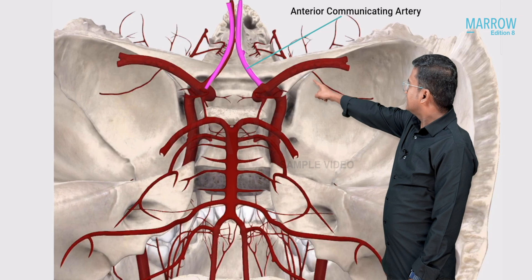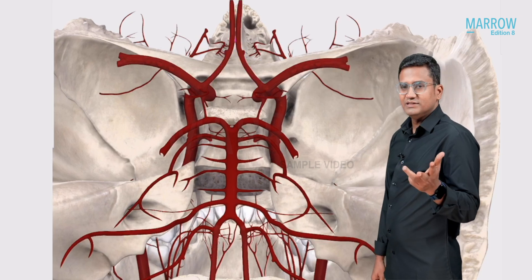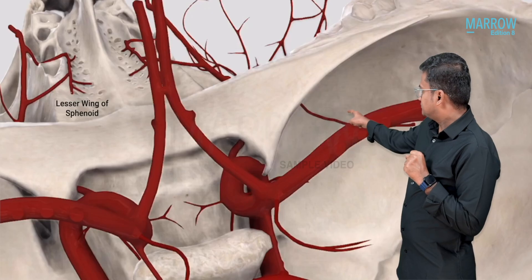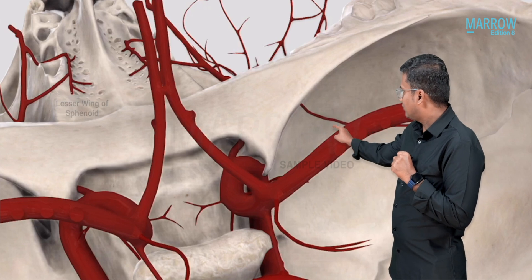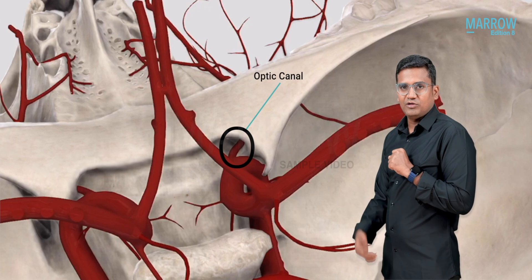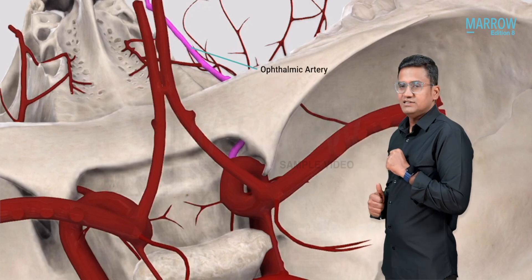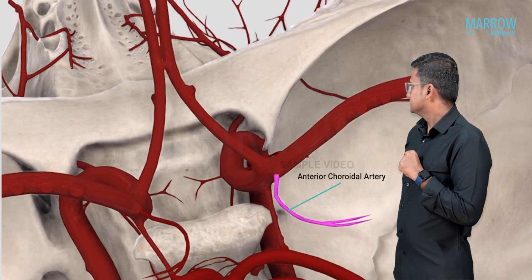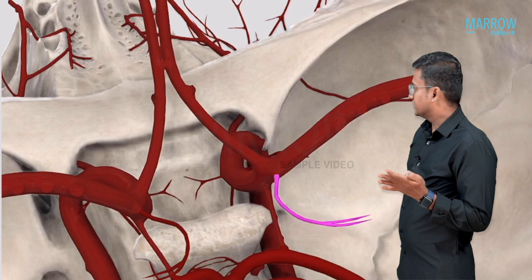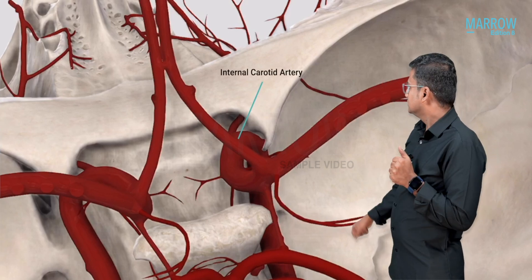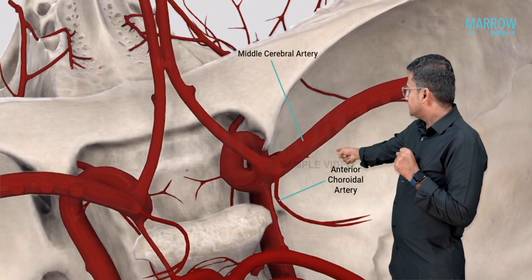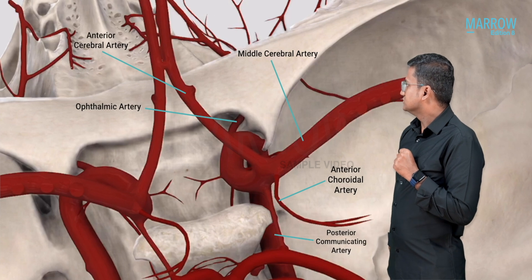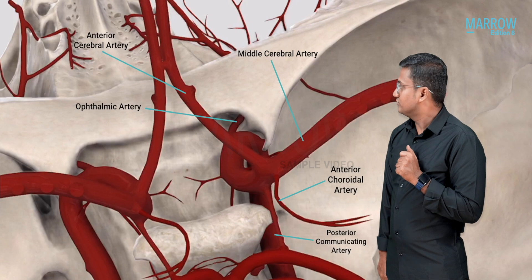The two anterior cerebral arteries are connected by the anterior communicating artery. Note that the middle cerebral artery is not involved in the circle of Willis. The optic canal, located in the lesser wing of sphenoid, transmits the ophthalmic artery, a branch of the intracranial part of the internal carotid. The intracranial part of the internal carotid gives five branches: (1) middle cerebral artery, (2) anterior choroidal artery, (3) posterior communicating artery, (4) ophthalmic artery, and (5) anterior cerebral artery.